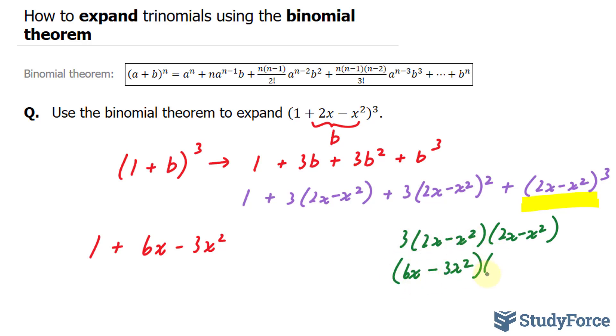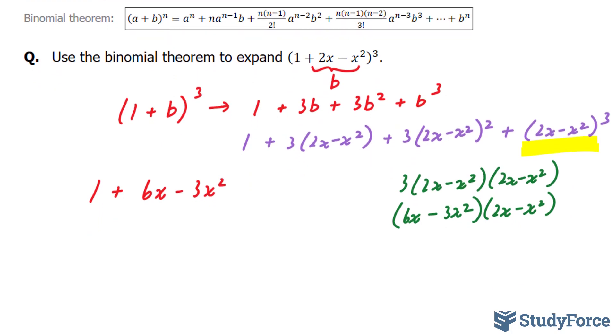We just multiplied these two. Now we need to multiply them to (2x - x²). 6x times 2x is 12x².